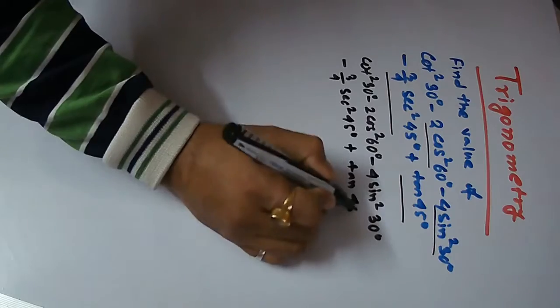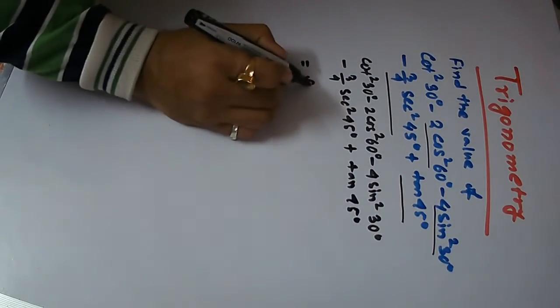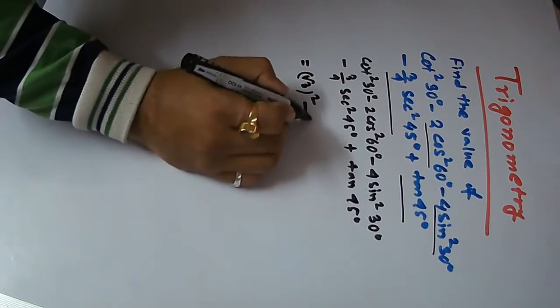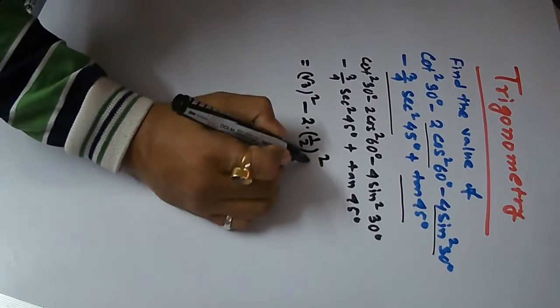This is root 3 squared, minus cos 60 which is 1 by 2, 2 into 1 by 2 whole squared, minus 4 times sin 30 which is 1 by 2.